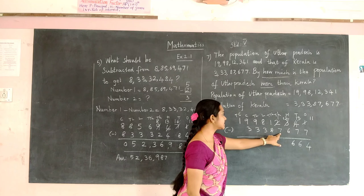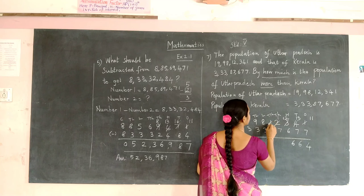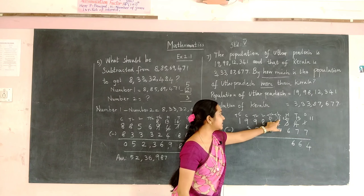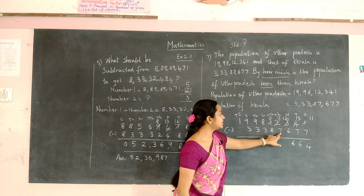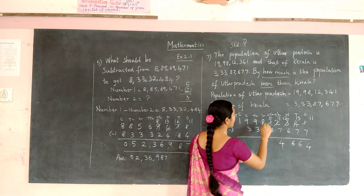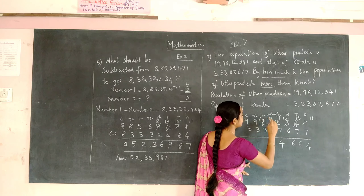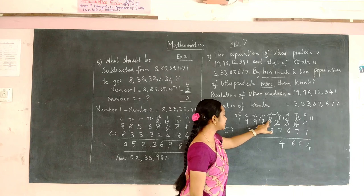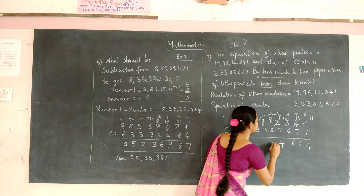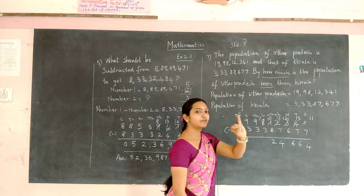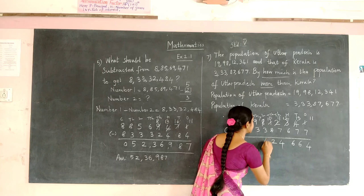Here also 7 is greater than 1, so borrow — 1 becomes 0 and this will become 11. Count from 7 until you reach 11: 8, 9, 10, 11 — the number is 4. 8 is greater than 0, so borrow 1 from 8 — 8 becomes 7 and 0 becomes 10. Count from 8 until you reach 10: 9, 10 — the number is 2. Count from 3 until you reach 7: 4, 5, 6, 7 — the number is 4.